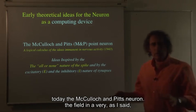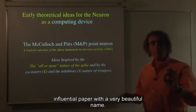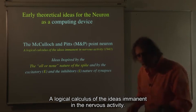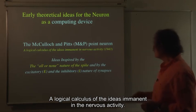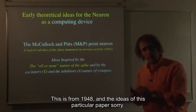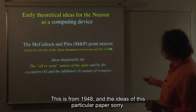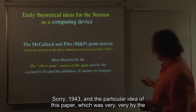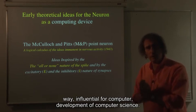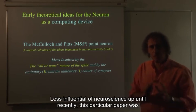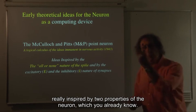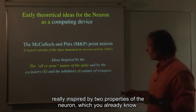It appeared in a very influential paper with a very beautiful name, a logical calculus of the ideas imminent in the nervous activity. This is from 1943. And the ideas of this particular paper, which was very influential for development of computer science, less influential of neuroscience up until recently, this particular paper was really inspired by two properties of the neuron, which you already know.